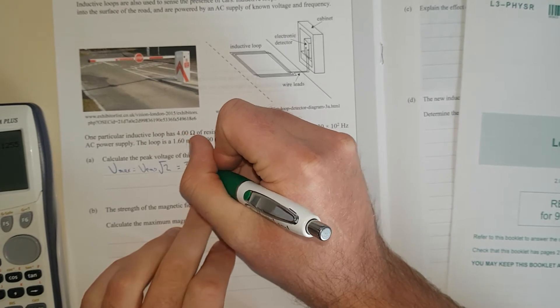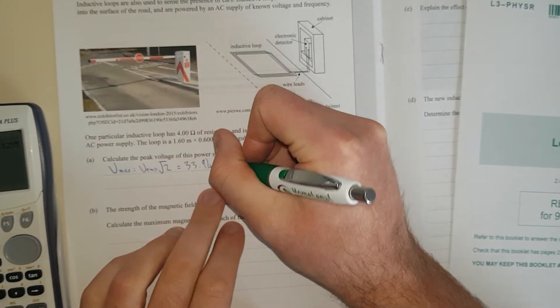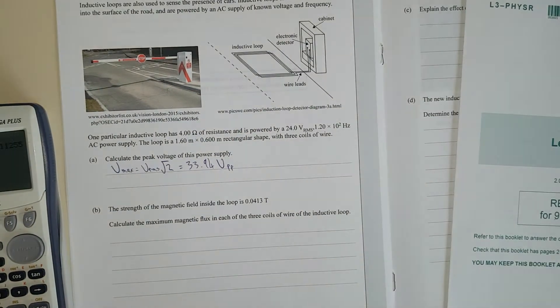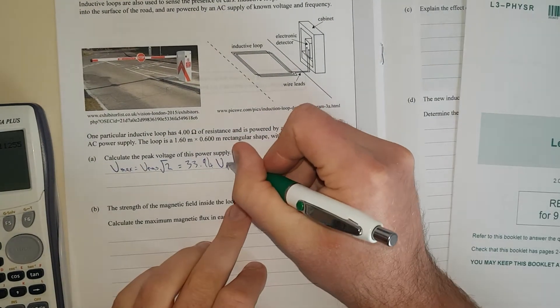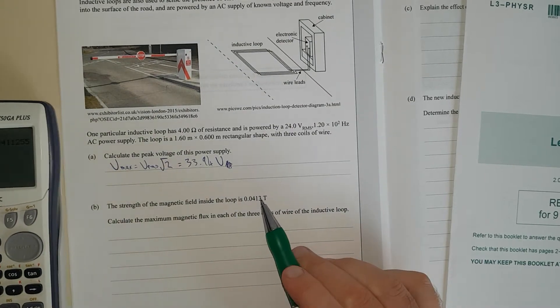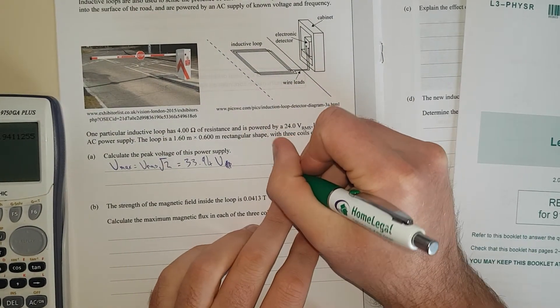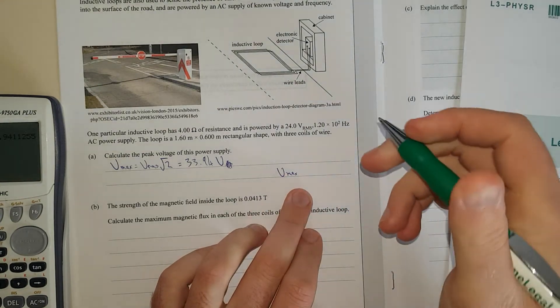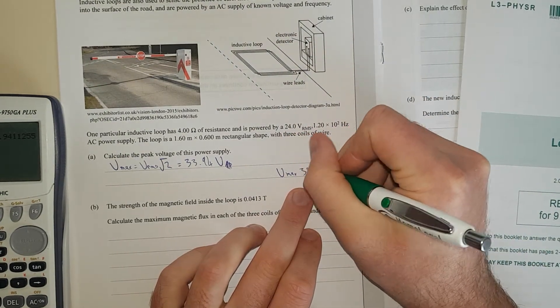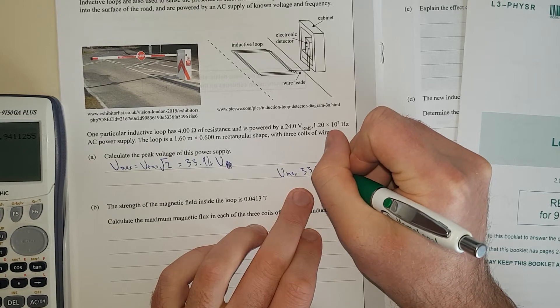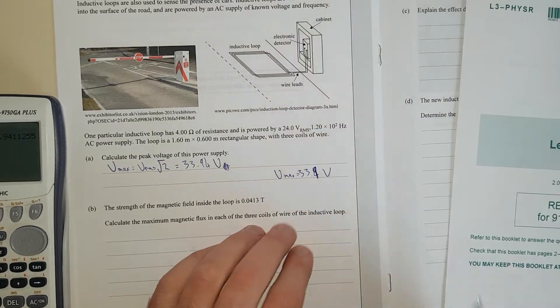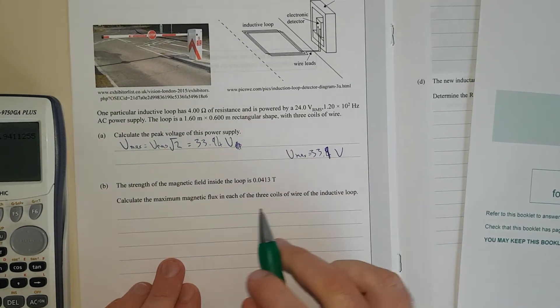33.94 volts, and I like putting PP so it's peak to peak. Vmax, I'll write down here, equals, we're going to round that to 33.9 volts because it's going to be 3 significant figures.